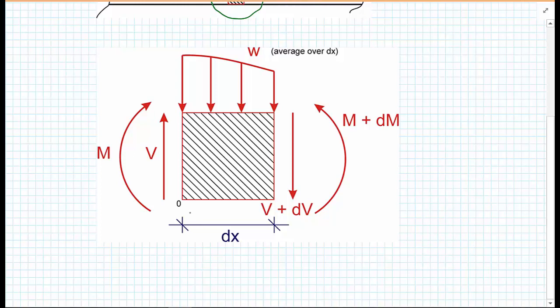On the left-hand side of the beam, we have a moment going clockwise. With a variation of the forces over the beam, we're going to have a moment M plus a small increment dM going anticlockwise. Likewise, with the shear forces, we have shear force V pointing upwards on the left-hand side and a shear force V plus dV pointing downwards on the right-hand side.